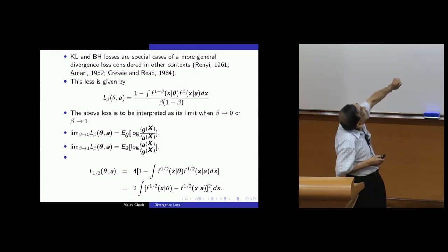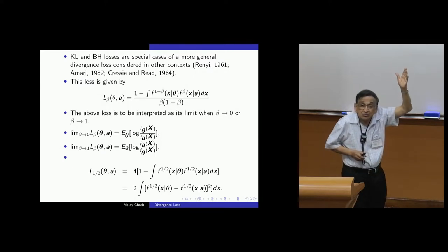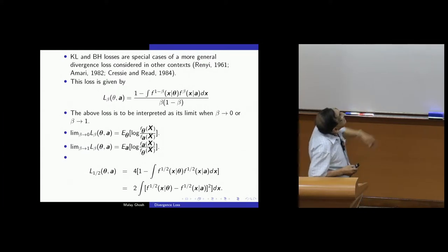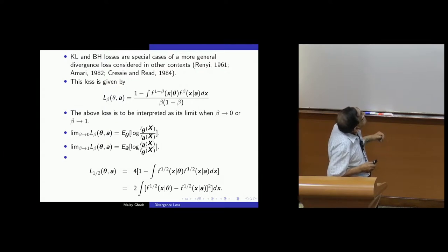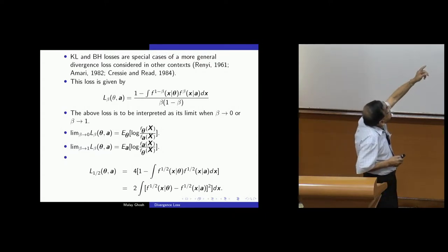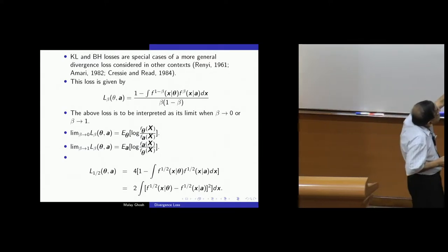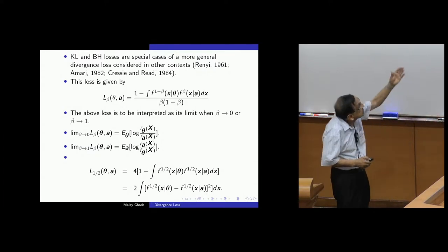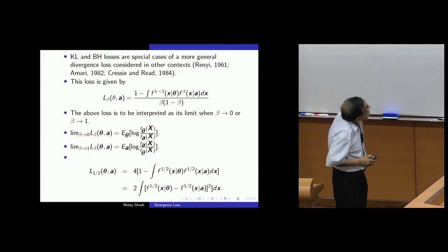Now Kullback-Leibler, a special case of a more general, this is what, Renyi is the one, 1962, Amari, Cressie-Reed. Somehow or other, it is Stigler's law. It goes by the name of Cressie and Reed, right? Stigler's law says it is not the person who first did it, it is someone else who got it. Now it can be interpreted as this limit, beta tending to zero or beta tending to one, beta tending to zero gives the Kullback-Leibler and beta tending to one gives the other side of Kullback-Leibler. And of course, if beta is half, you can write four times, and it is just the distance between the square root of the two densities.